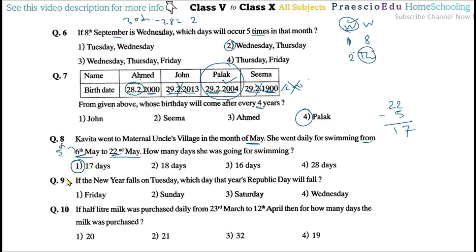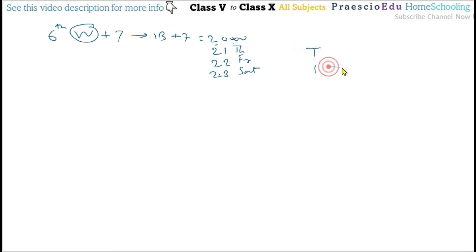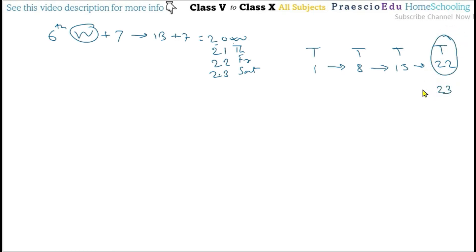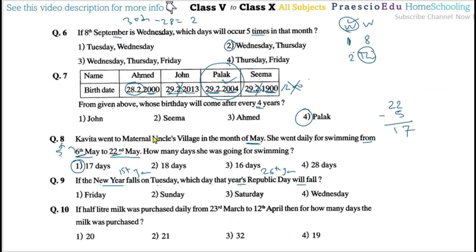Question number nine: If New Year falls on Tuesday, which day will Republic Day fall that year? New Year is 1st January on Tuesday. Adding 7 each week: 8th, 15th, 22nd are Tuesdays. Then 23rd is Wednesday, 24th Thursday, 25th Friday, and 26th January is Saturday. So Republic Day falls on Saturday — option number three.